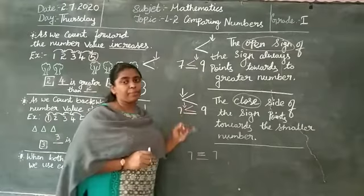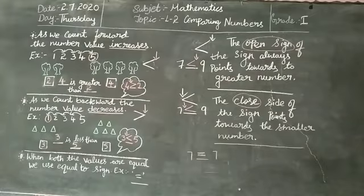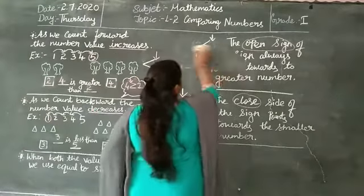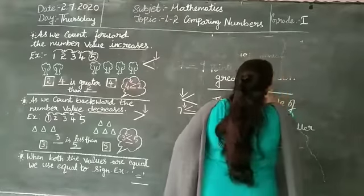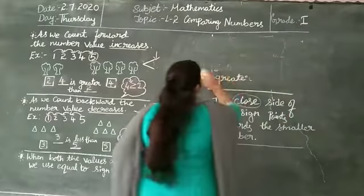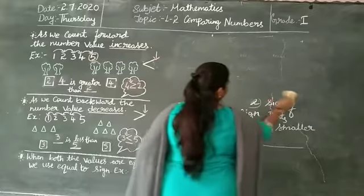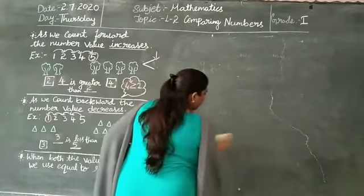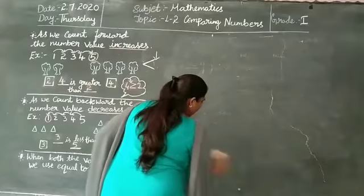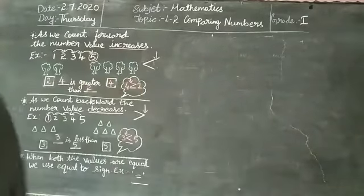Got it, children? Let's do some problems so we can learn in detail. We will write first — counting forward and backward. The value will increase and at the same time decrease.